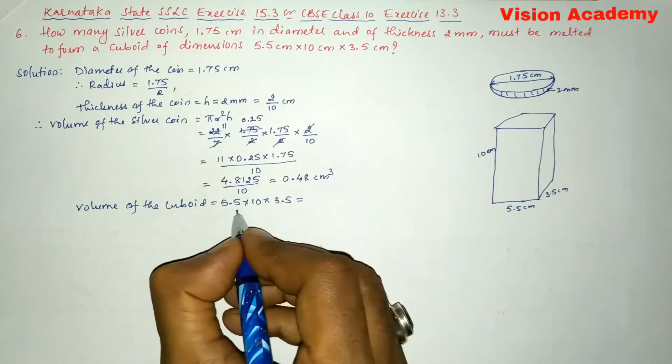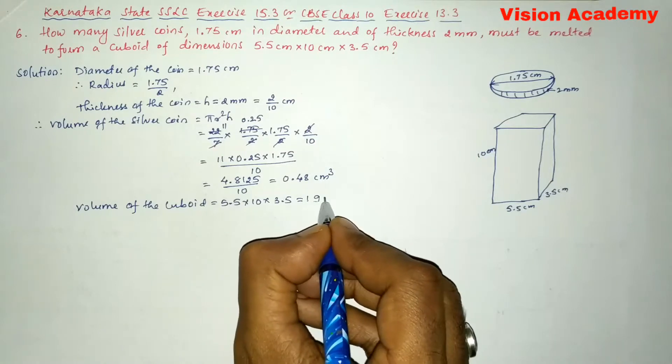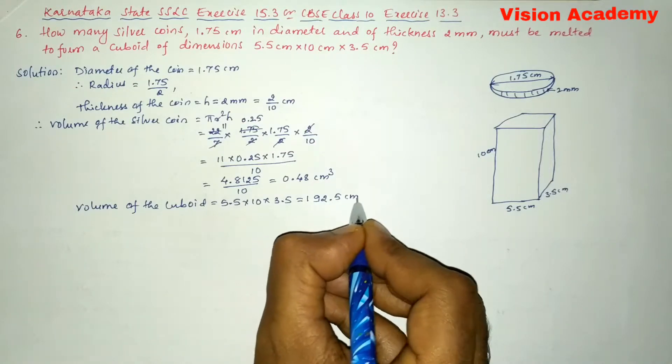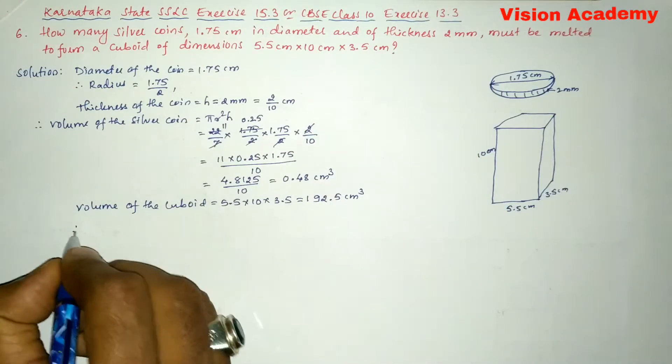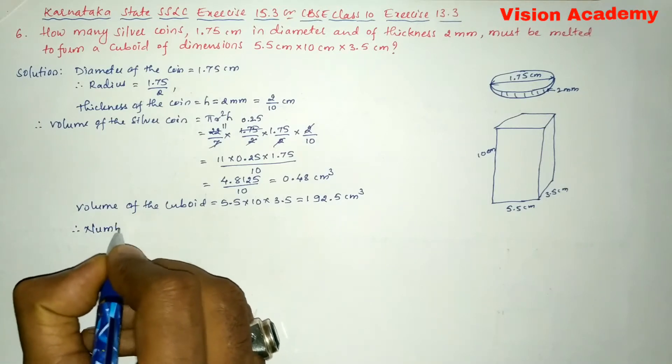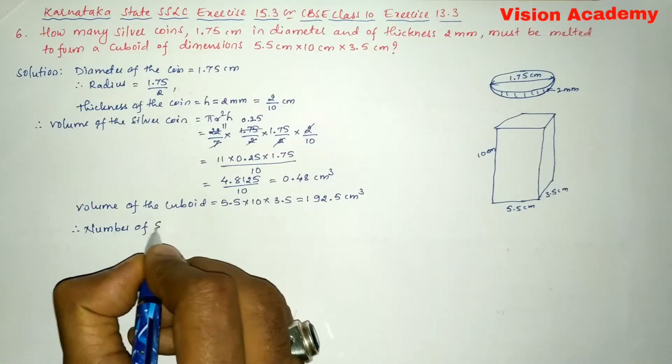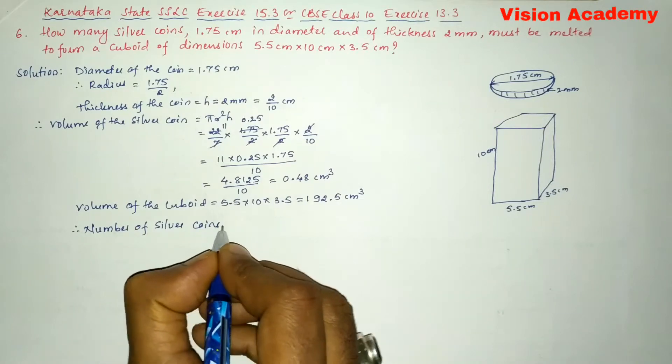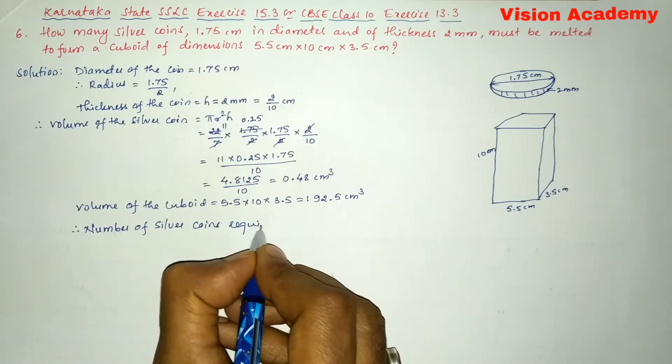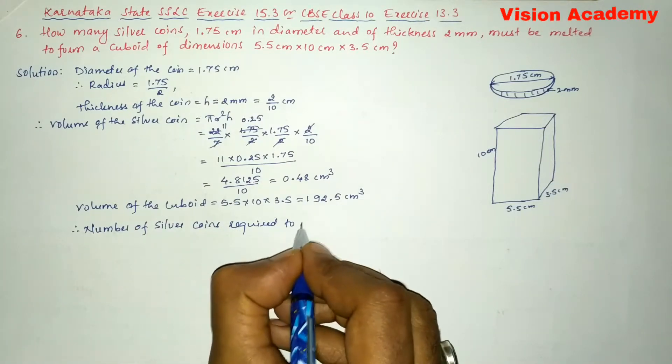is equal to 192.5 divided by 0.48. So this gives us 401 coins.